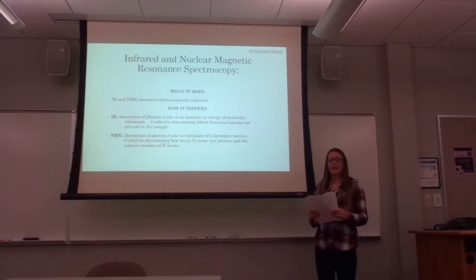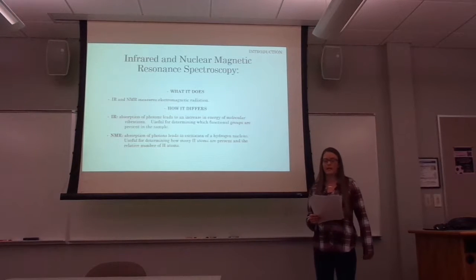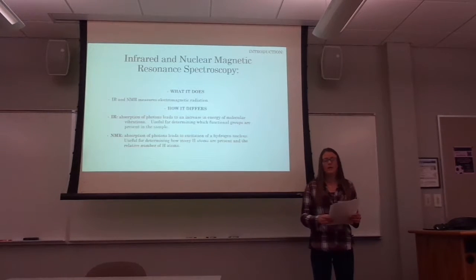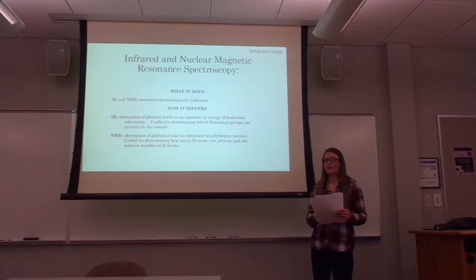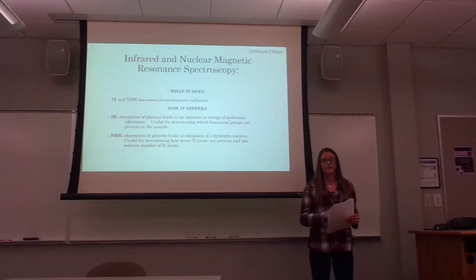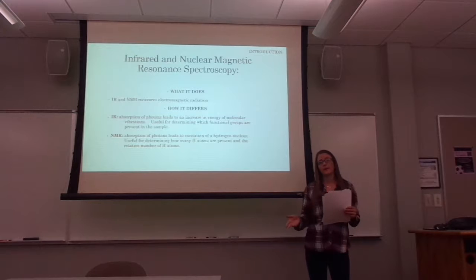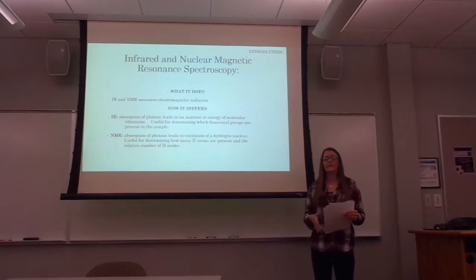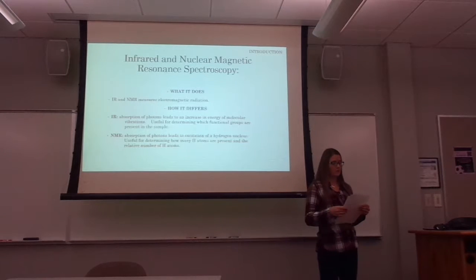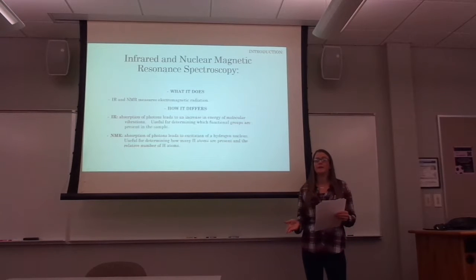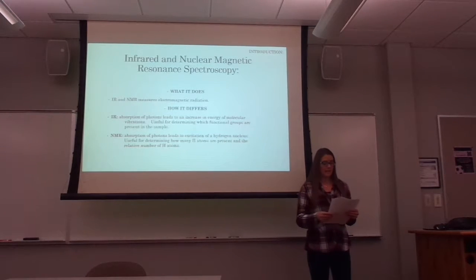IR and NMR both measure the amount of electromagnetic radiation absorbed by a sample. According to the Chemo 20 lab manual, IR involves absorption of a photon that creates an increase in energy of a molecular vibration, and we use IR to see which functional groups are absent or present on the spectrum. In NMR, absorption of a photon leads to excitation of a hydrogen nucleus, helping us see the different kinds and relative numbers of hydrogen atoms present.